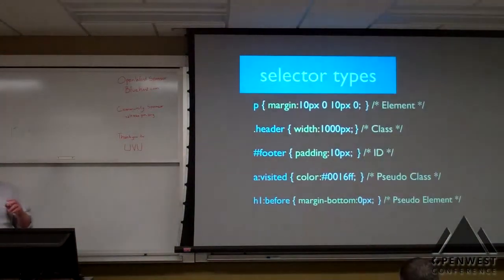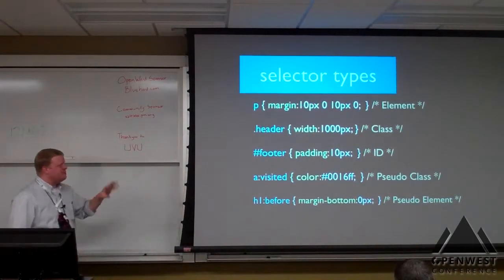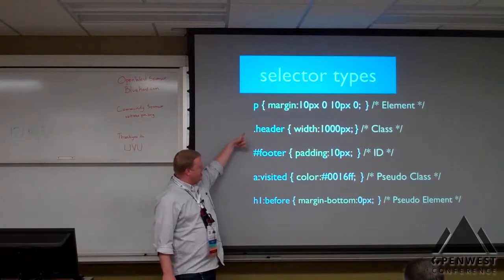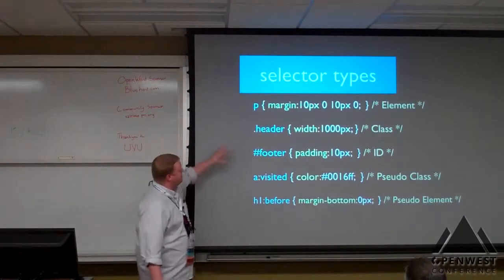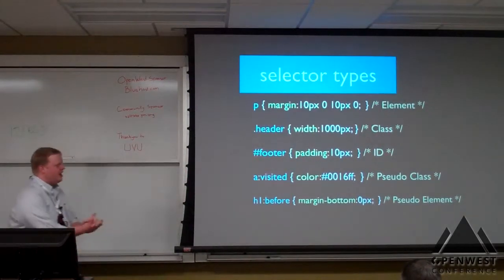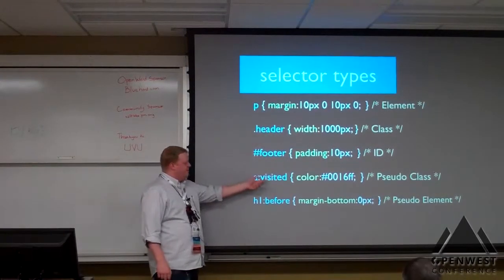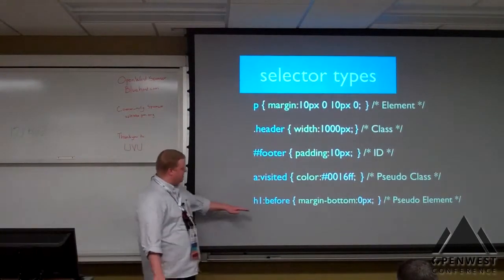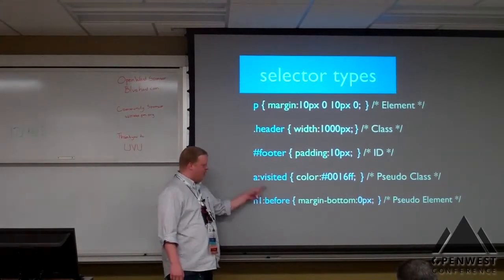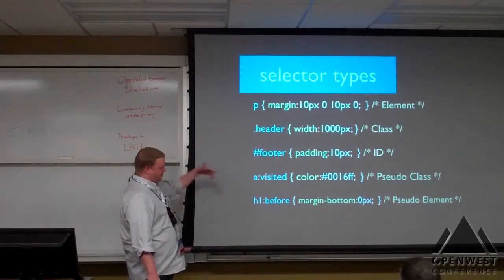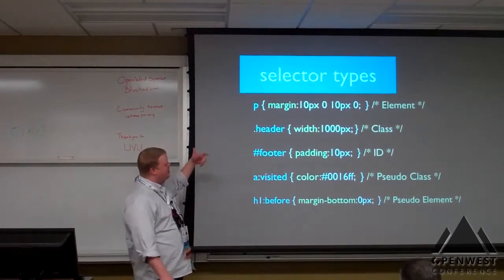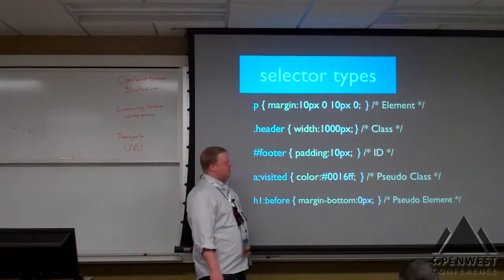First topic: selectors. You have basically four types of selectors: an element selector, a class selector, an ID, a pseudo-class, and a pseudo-element. The pseudo-class you'll use a lot with your anchor tags — if it's visited, active, or hover. Coming in CSS3, we're starting to get more of the pseudo-elements where you can select elements before or after — for example, whatever's before or after an H1. All CSS basically boils down to: you give a selector saying 'select this type of element and apply these styles to it.'